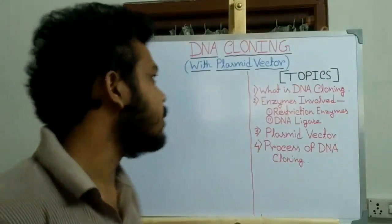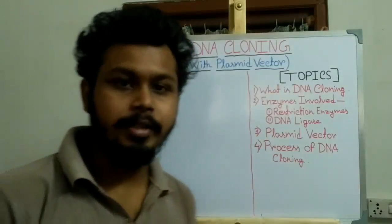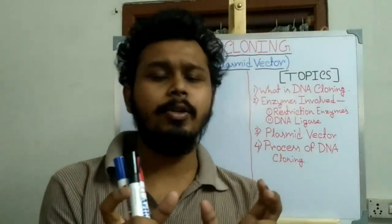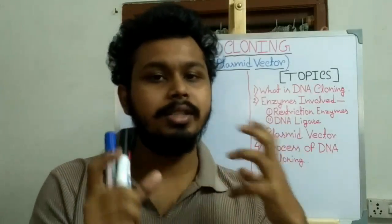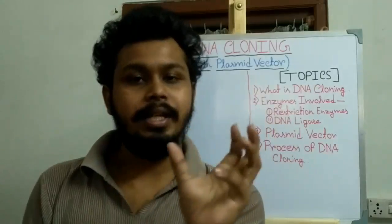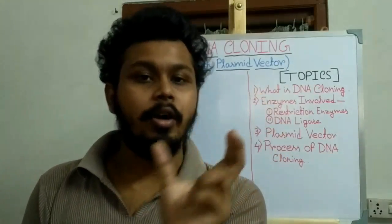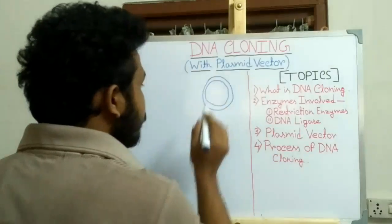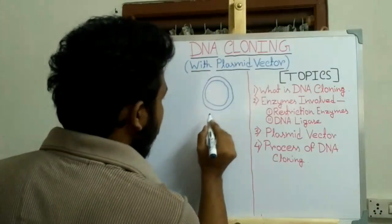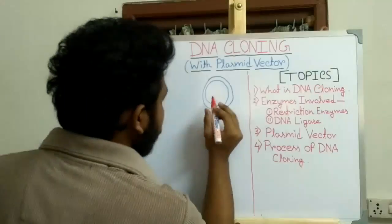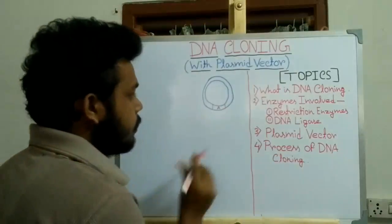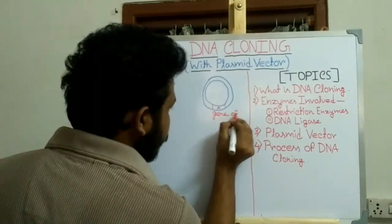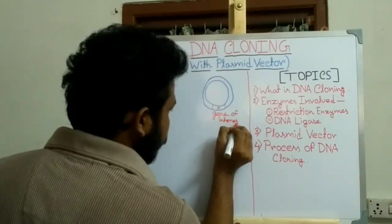Hello friends, today in this video I am going to discuss about DNA cloning with plasmid vector. First we have to know about DNA cloning. DNA cloning is a technique which is used to produce a large amount of identical DNAs from a single DNA fragment or a single gene of interest. Now suppose this is a genomic DNA, and here a gene is present known as gene A. This gene A is our gene of interest.